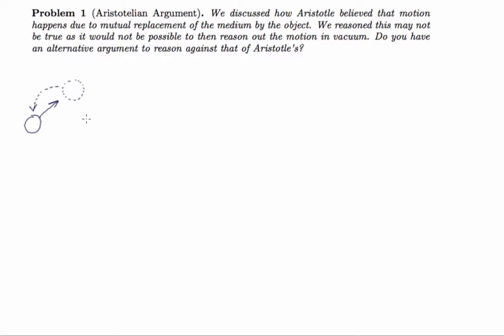We reasoned out that this argument is not so sound to explain why the motion takes place, because what about an experiment in vacuum? Vacuum doesn't have any medium, but still if you throw an object, the object will fall to the ground. This was precisely the experiment which was done by Galileo.